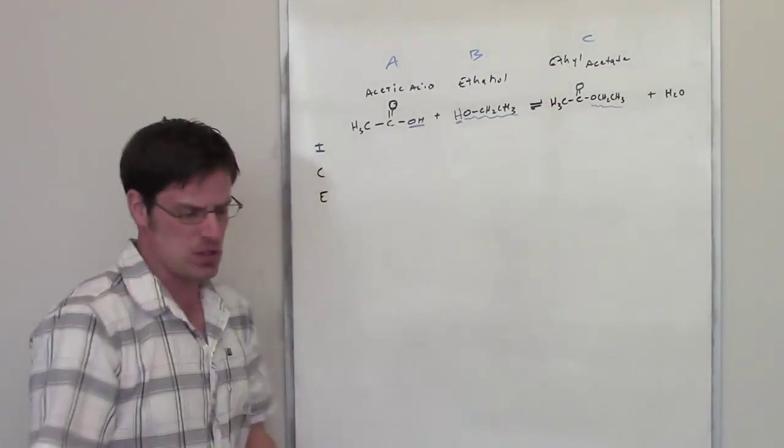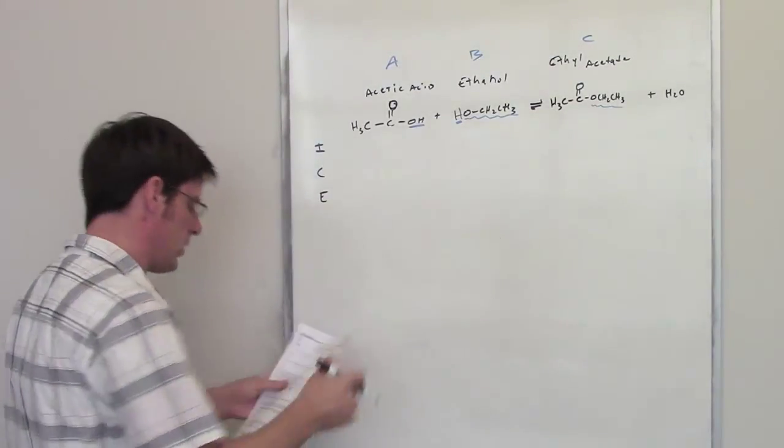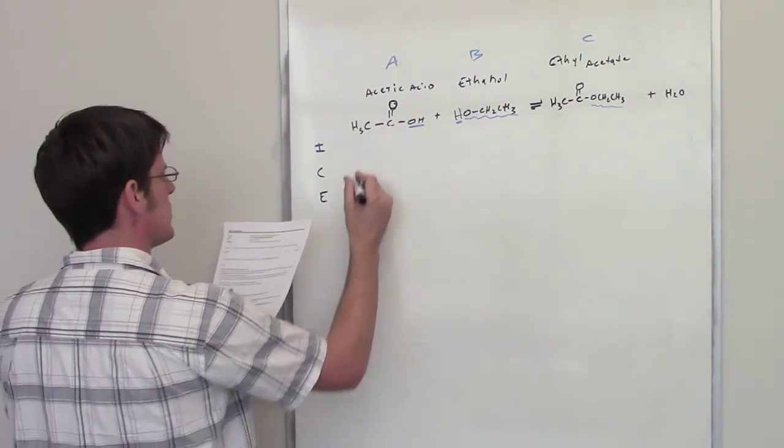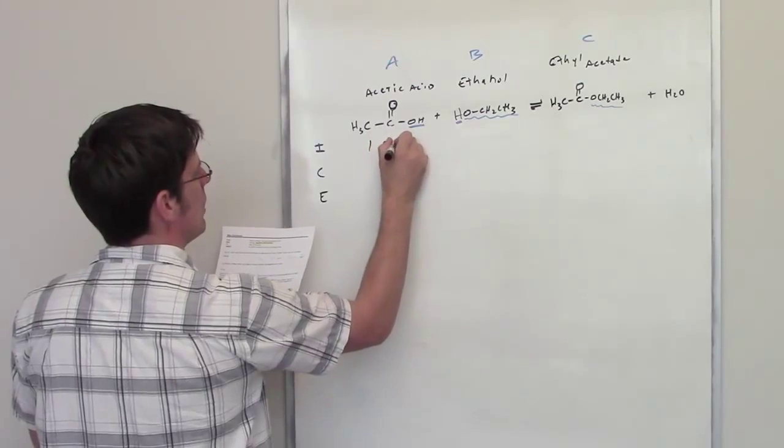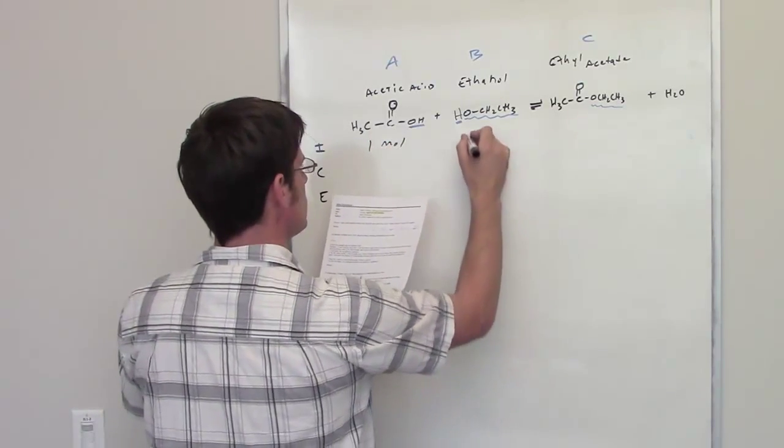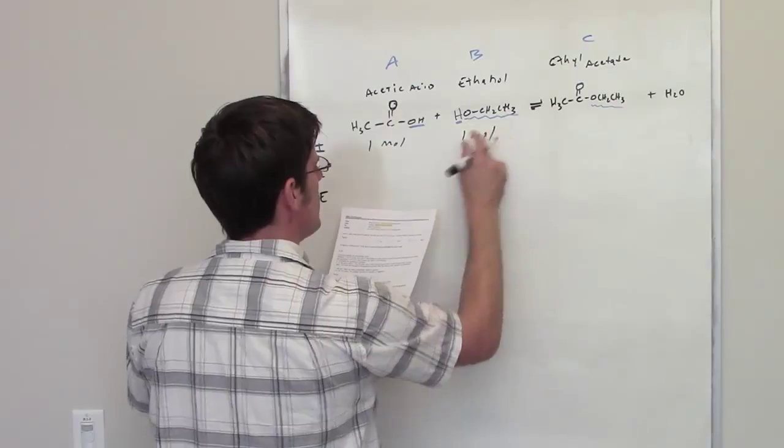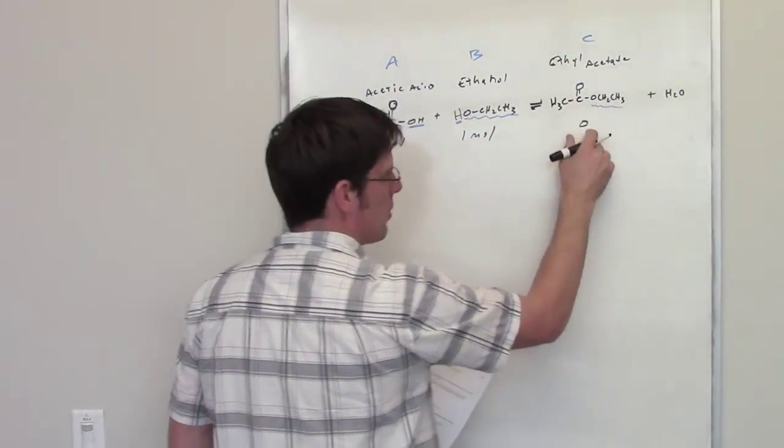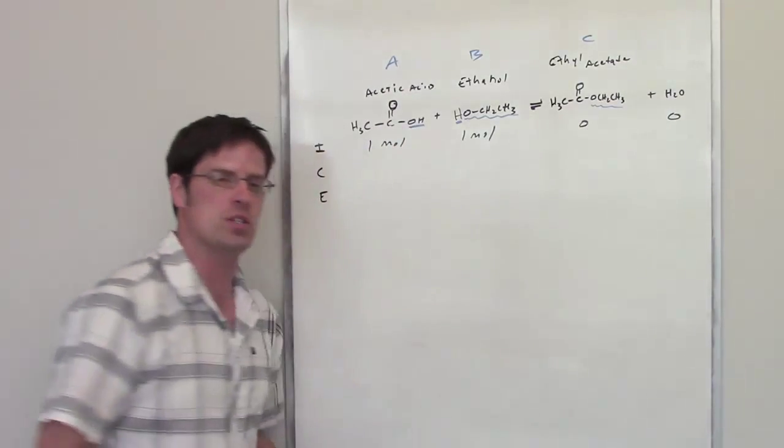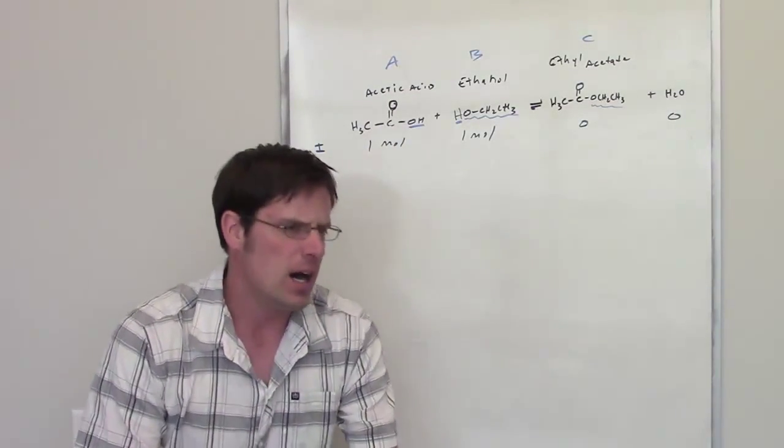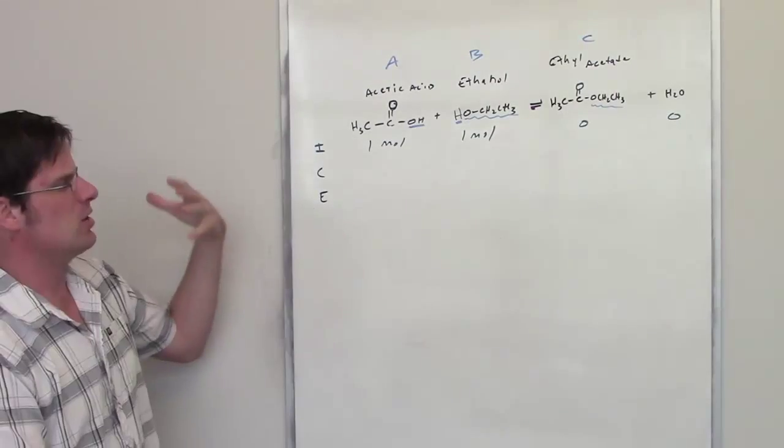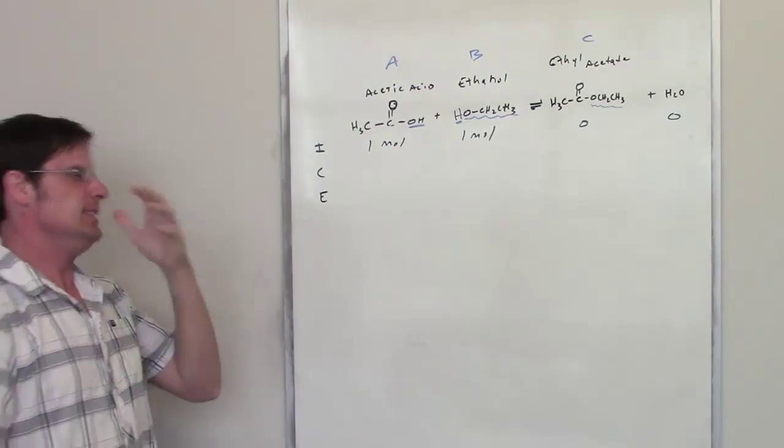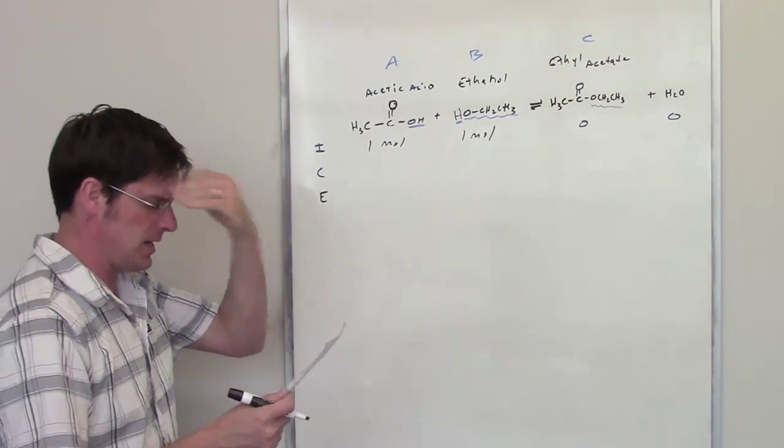So the problem goes on to say that at initiation, and we are going to use an ICE table on this, there's one mole of this thrown in, or is added to one mole of this. And of course at initiation we're going to assume that there are zero moles of ethyl acetate and zero moles of water. It does not say how many liters total of solution or if there's any other solvent added. So that might sort of throw a wrench into the works a little bit.